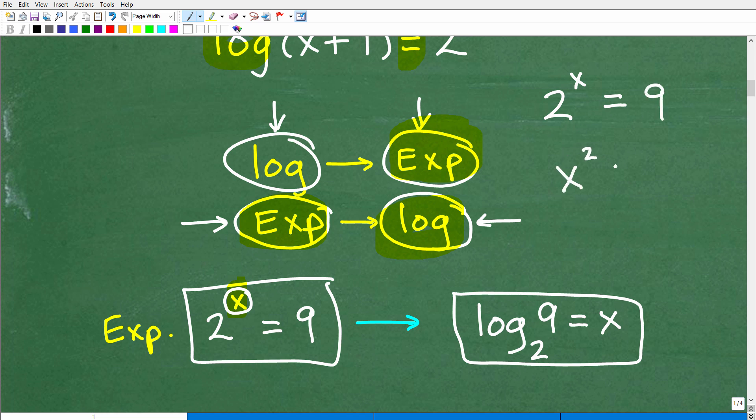This is much, much different than this equation: x squared is equal to 9. So don't confuse the two, right? So this is a quadratic equation. To solve this, we simply just take the square root of both sides. So x is equal to positive and negative 3. No problem, right? But that's because the x is in the base.